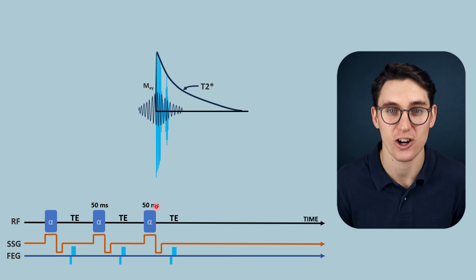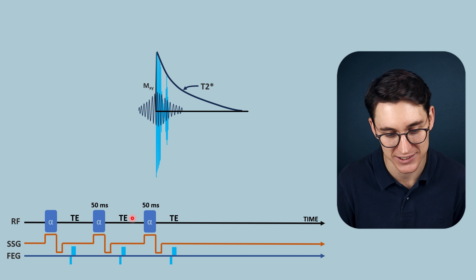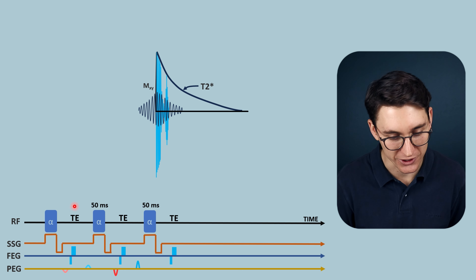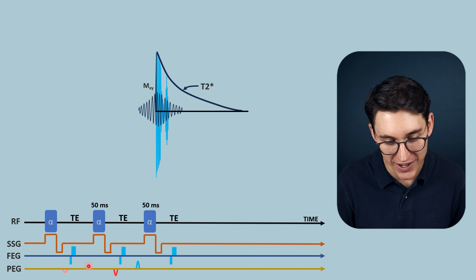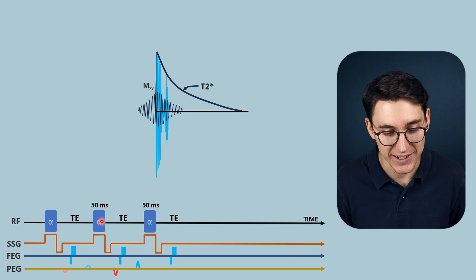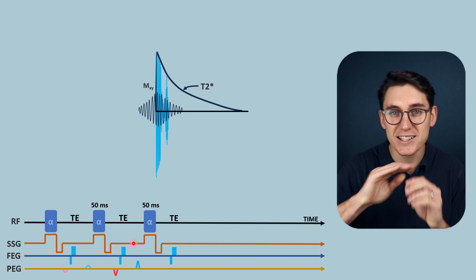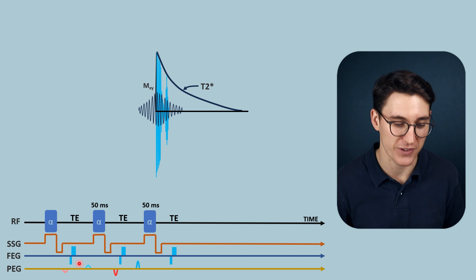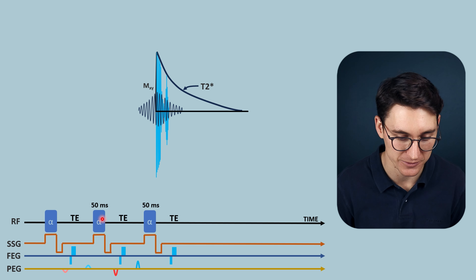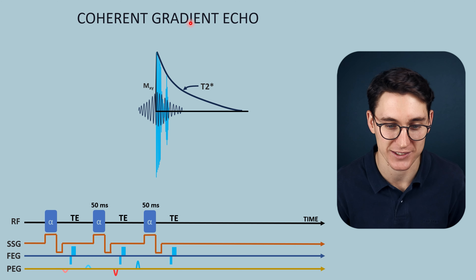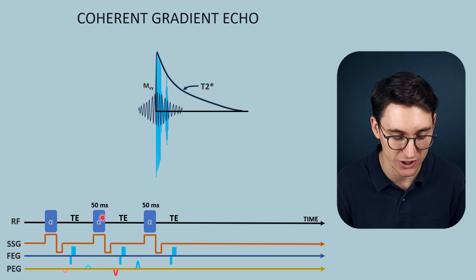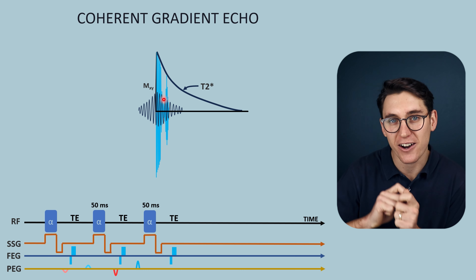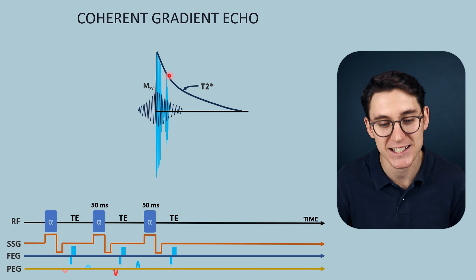The TEs must be short because one, the TR is short; two, shorter TE gives higher signal; and three, we need time for phase encoding gradients. Prior to TE we apply a specific phase encoding gradient, then a re-phasing gradient after TE before the next RF pulse, allowing us to sample a different line of k-space at the next TE. This means spins are completely in phase at every TE. This is known as a coherent gradient echo - coherent meaning spins are in phase at the next TE - and it samples signal from both the stimulated echo and the gradient echo, giving a mixture of T1 and T2 contrast.